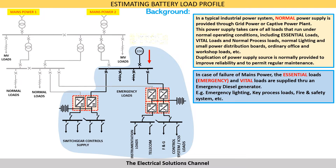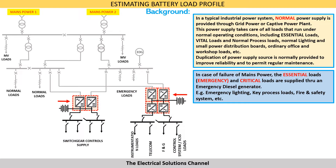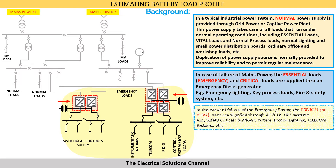In case of failure of mains power, the essential loads or emergency loads and vital loads are supplied through an emergency diesel generator. Some examples of these loads are emergency lighting, key process loads, fire and safety systems. In the event of failure of emergency power, the critical or vital loads are supplied through an AC or DC UPS system — for example, safety critical shutdown systems, escape lighting, and telecom systems.